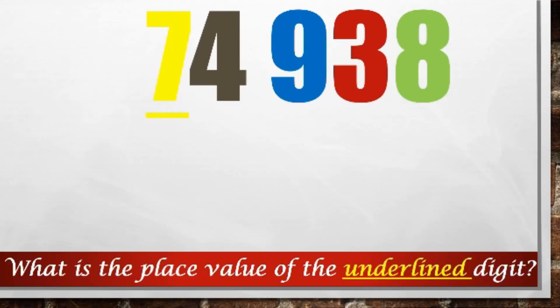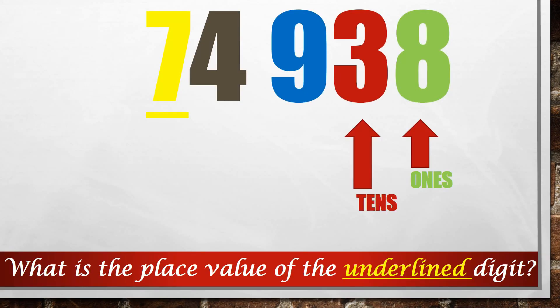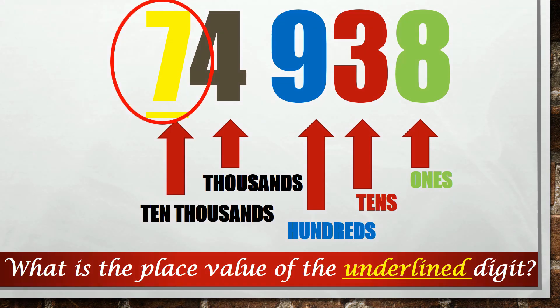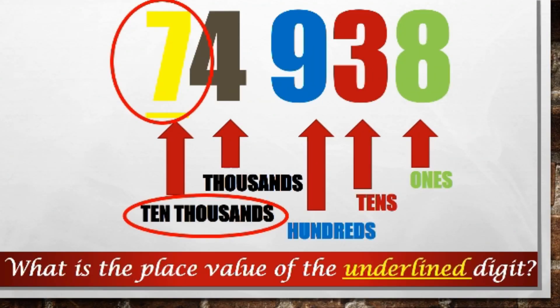What is the place value of the underlined digit? Ones, tens, hundreds, thousands, ten thousands. The underlined digit is 7, and its place value is ten thousands.